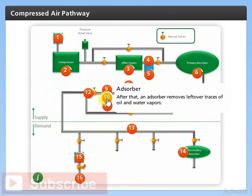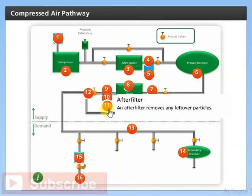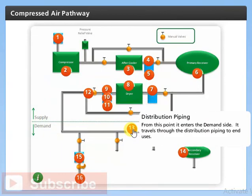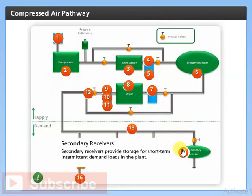After the cold coalescer, an adsorber removes leftover traces of oil and water vapors. An after filter then removes any leftover particles. If used, a control receiver and pressure flow controller can provide fine pressure regulation at minimum pressure to minimize leakage losses and improve productivity. From this point, the air enters the demand side, traveling through the distribution piping to end uses. Secondary receivers provide storage for short-term intermittent demand loads in the plant.